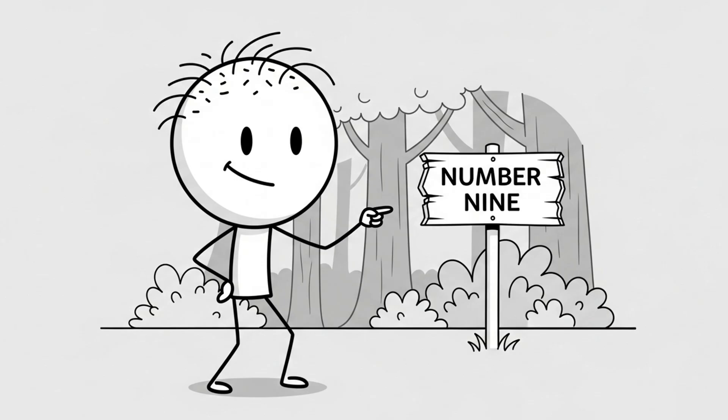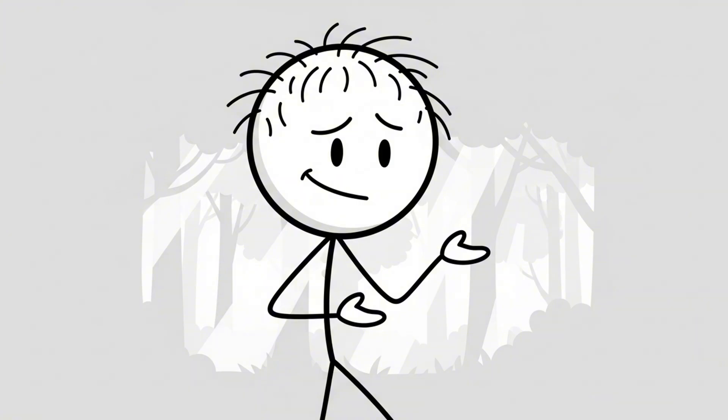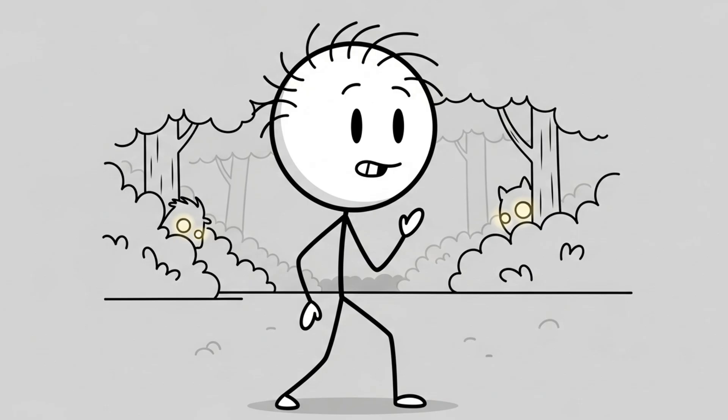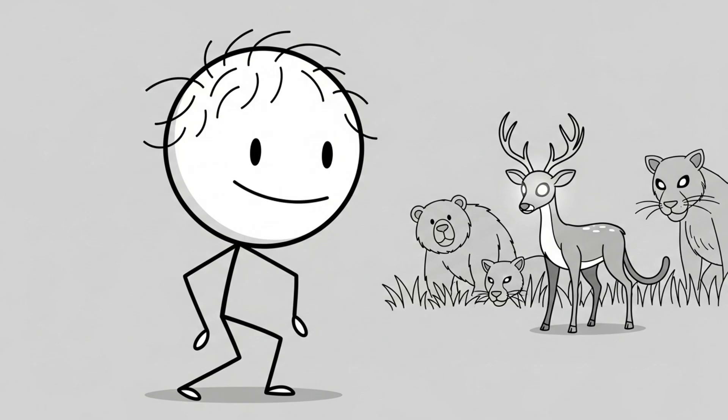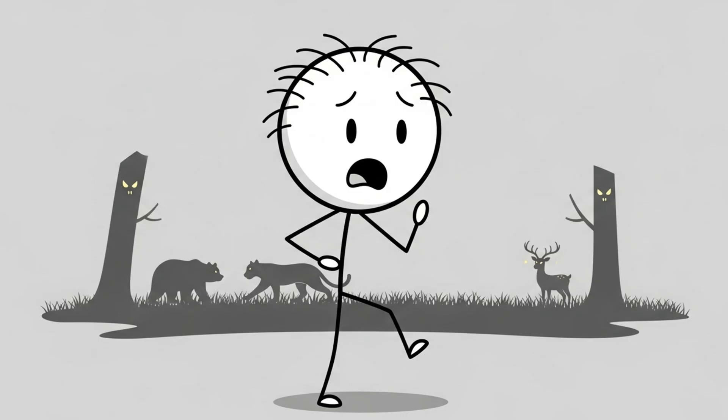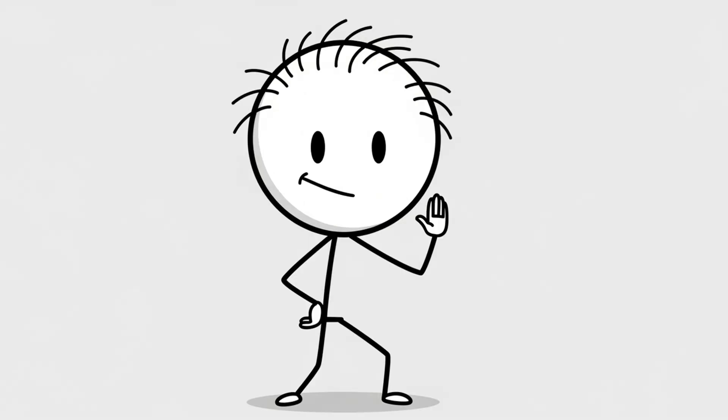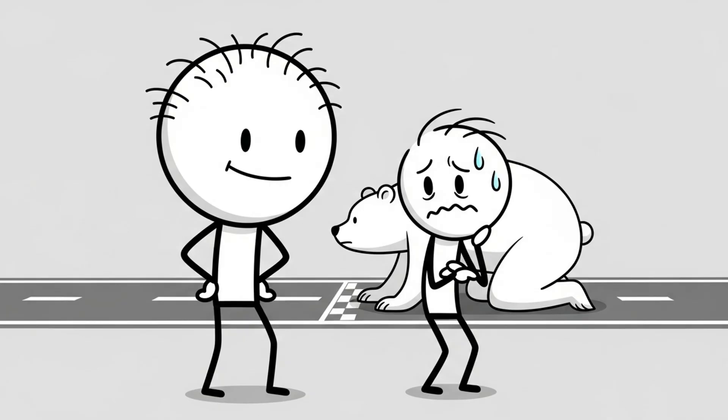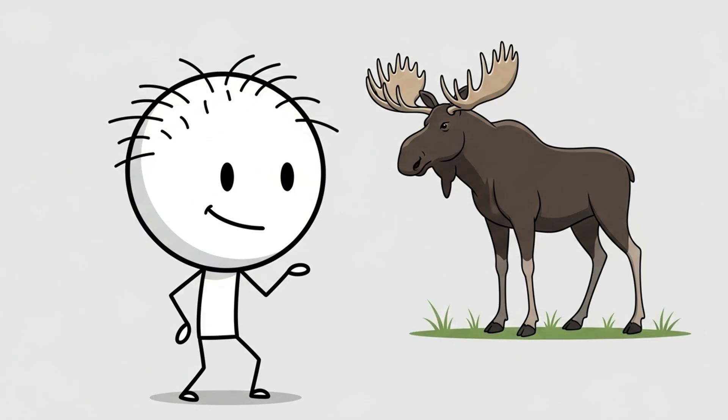Number 9, you can outrun a wild animal. Let's end with this gem of optimism. You see a wild animal, maybe a bear, a cougar, or some nightmare deer with glowing eyes and a vengeance arc, and your brain screams run, except don't. Seriously, don't. You are not faster than a bear. You are not faster than a moose. You are definitely not faster than a wolf pack that trained for this moment like it's the Animal Olympics.